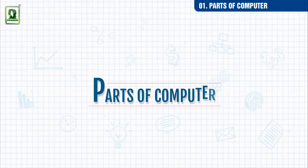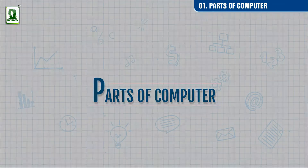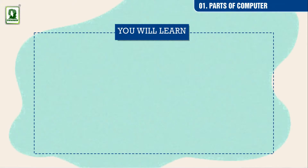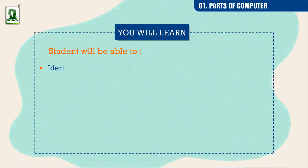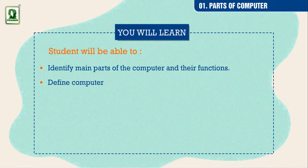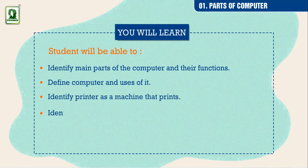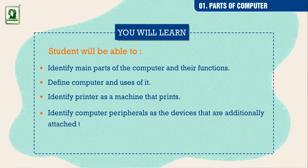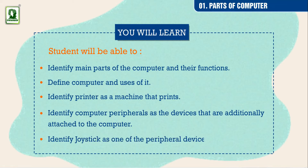Parts of Computer. Students will be able to identify the main parts of the computer and their functions, define a computer and its uses, identify a printer as a machine that prints, identify computer peripherals as devices additionally attached to the computer, and identify a joystick as one of the peripheral devices.